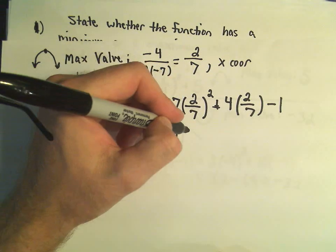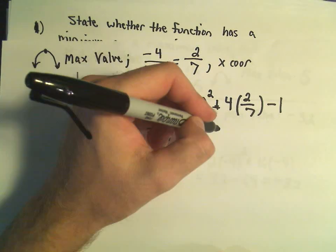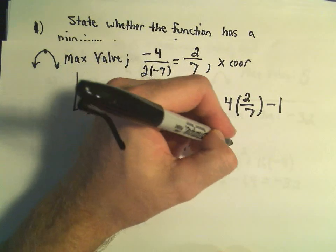So let's see, this is negative 7. We'll get 4 over 49 when we square those. It looks like we get positive 8 over 7.